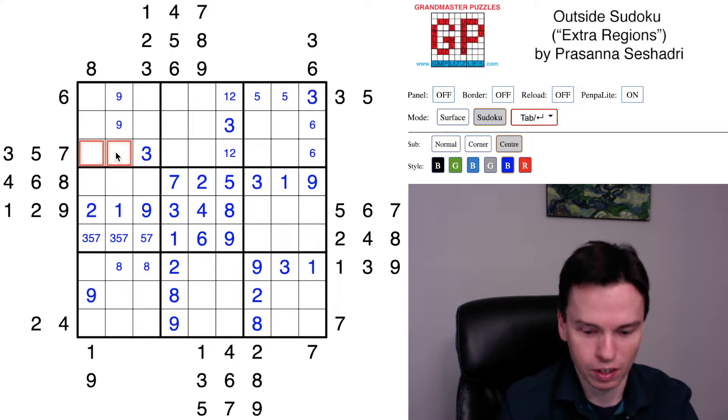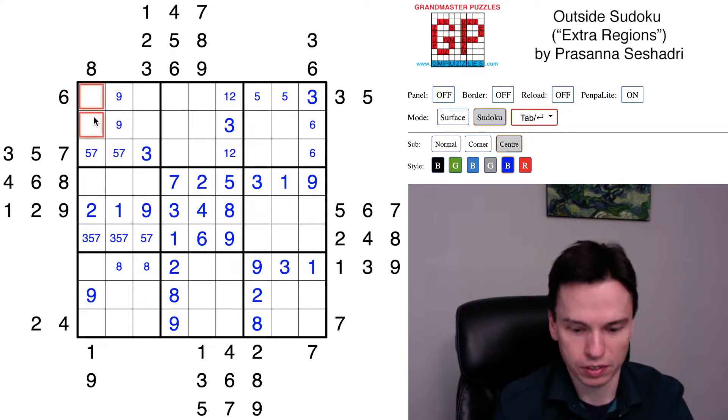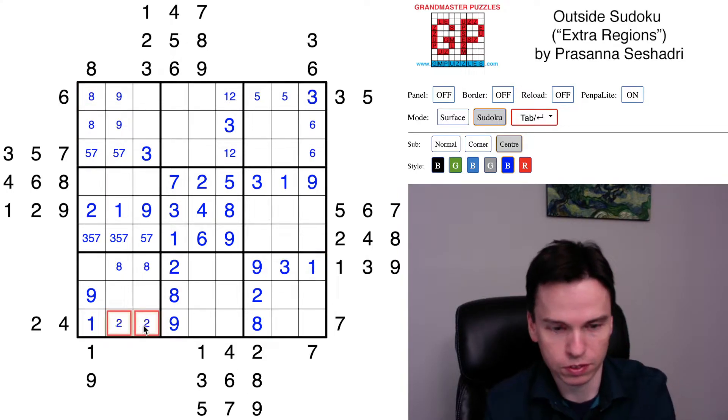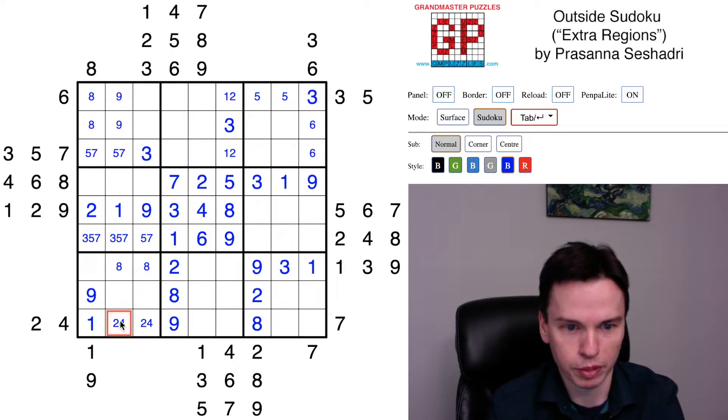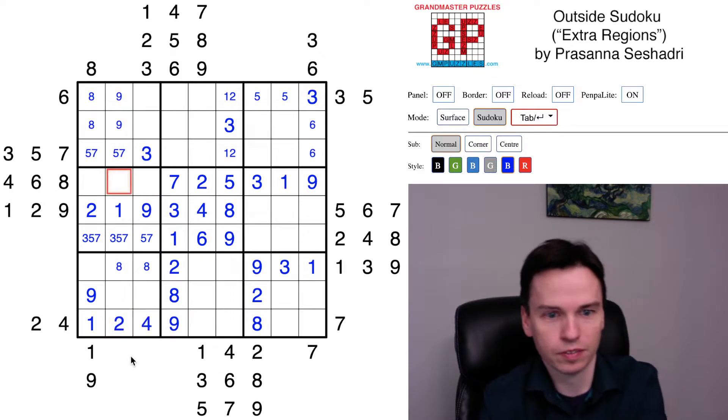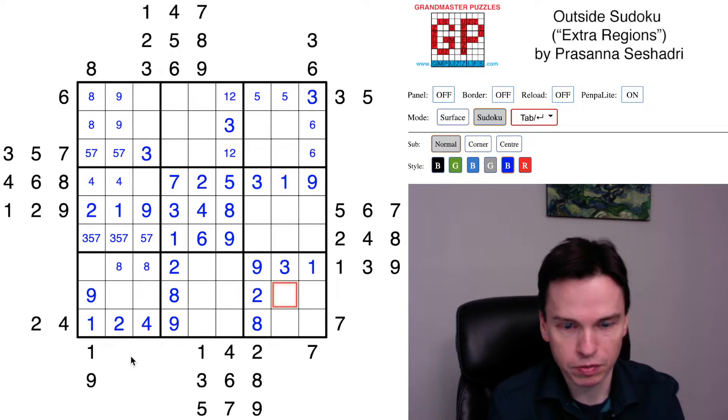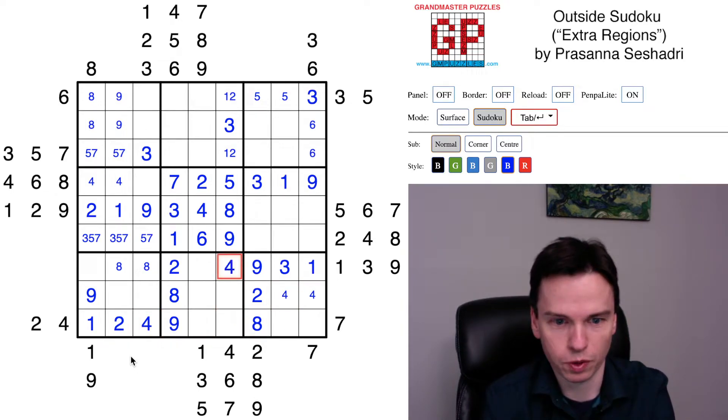Which means there's a 9 in these cells, can't actually be in those cells because of the 5, 7 pair. This 1 puts in this 1 which actually forces 2, 4 in these spaces, but there's a 2 up above so this is 2, this is 4.